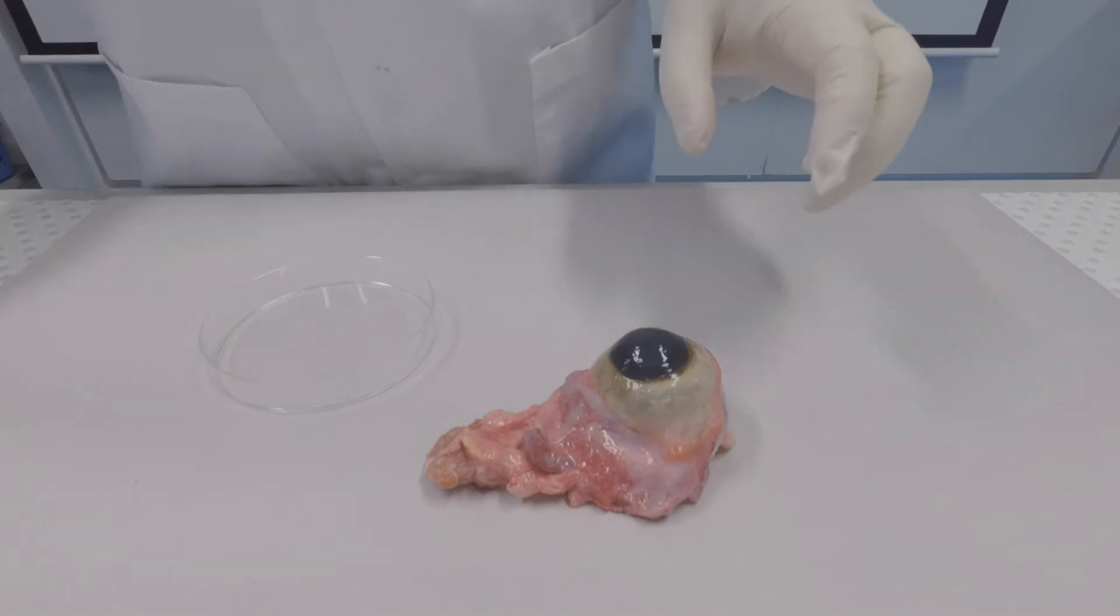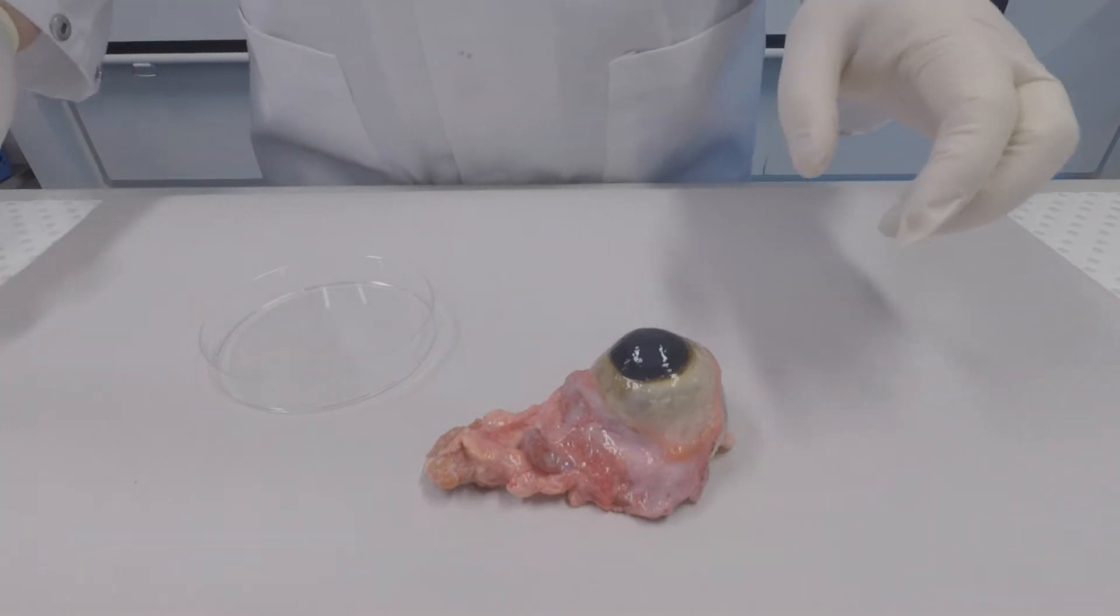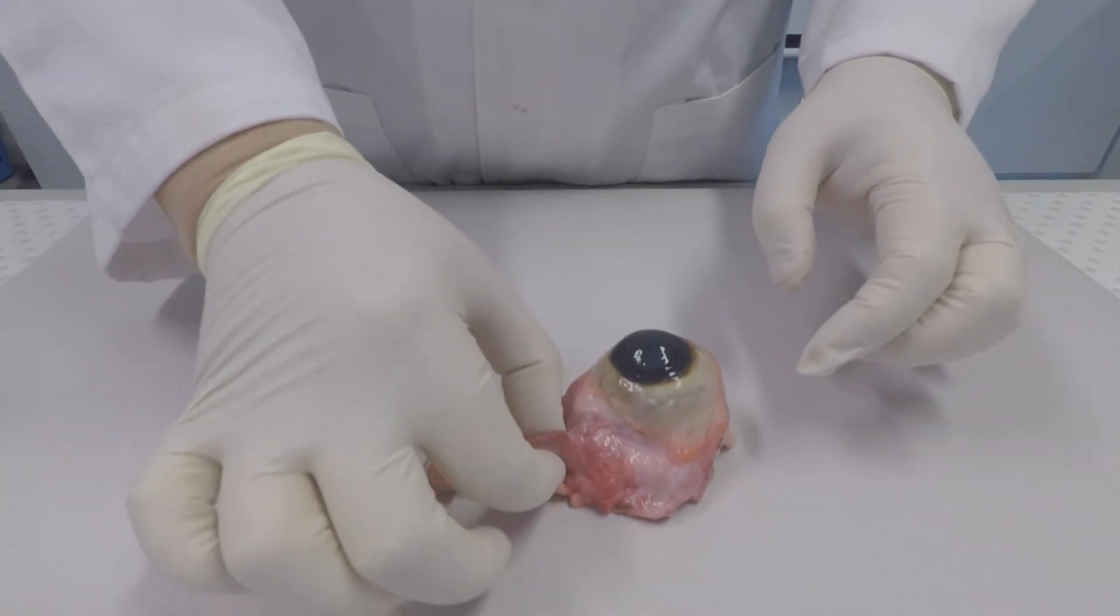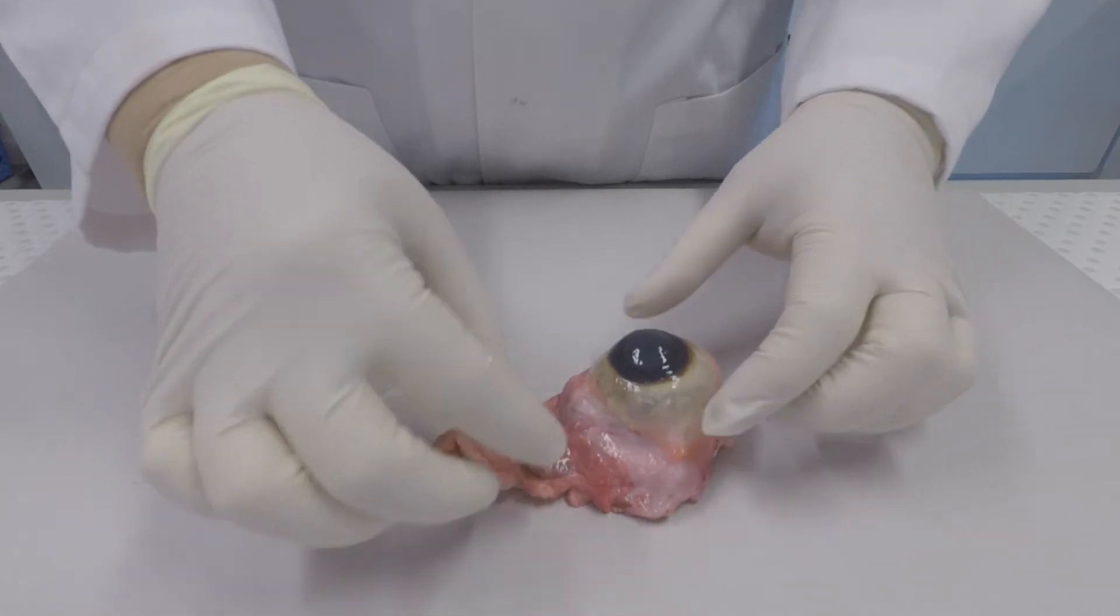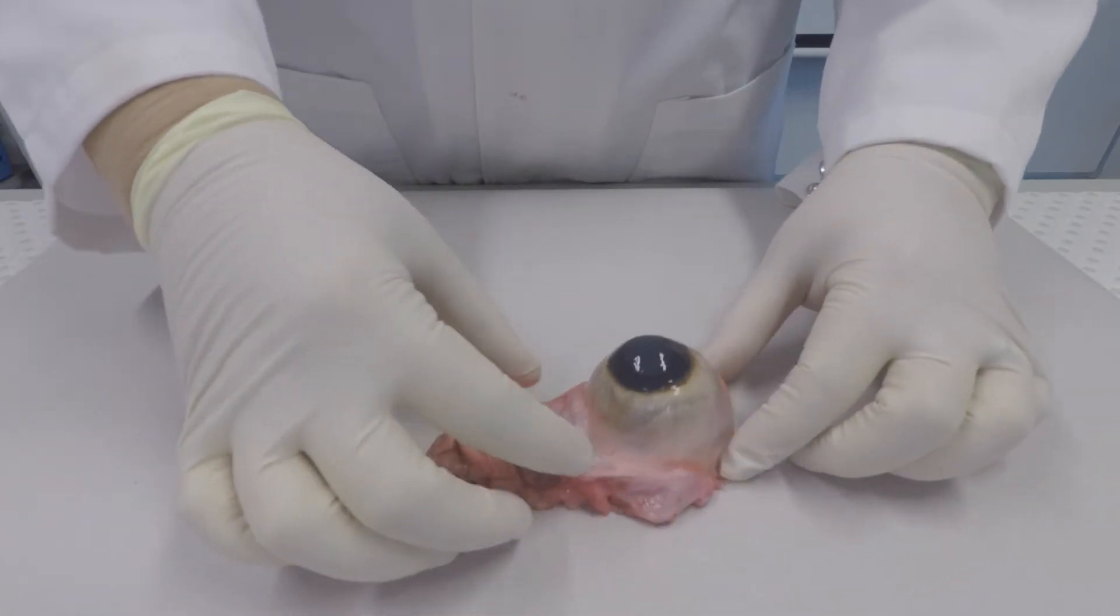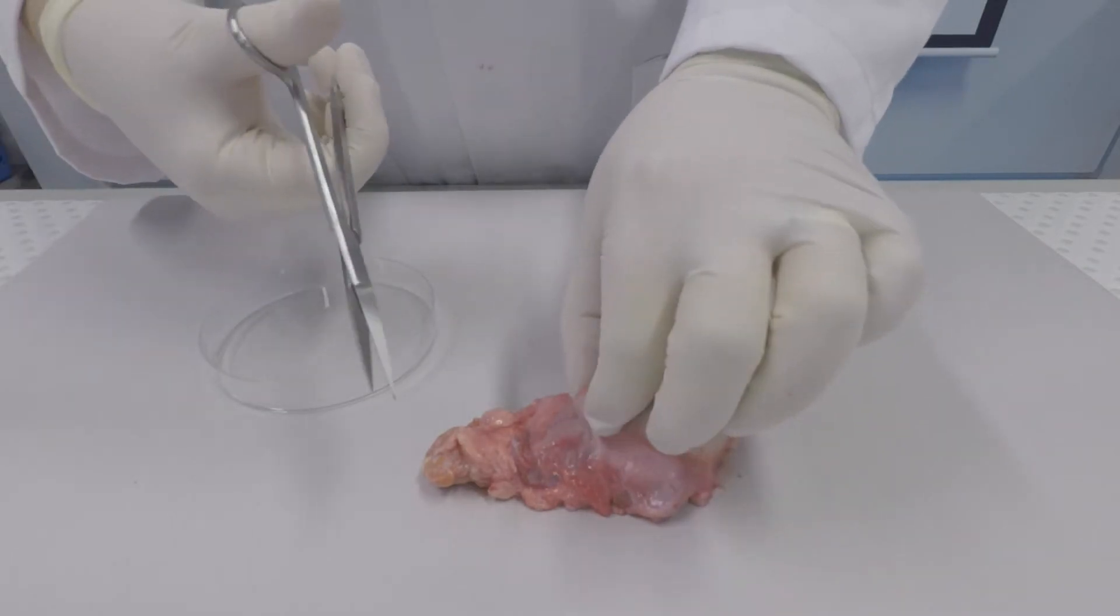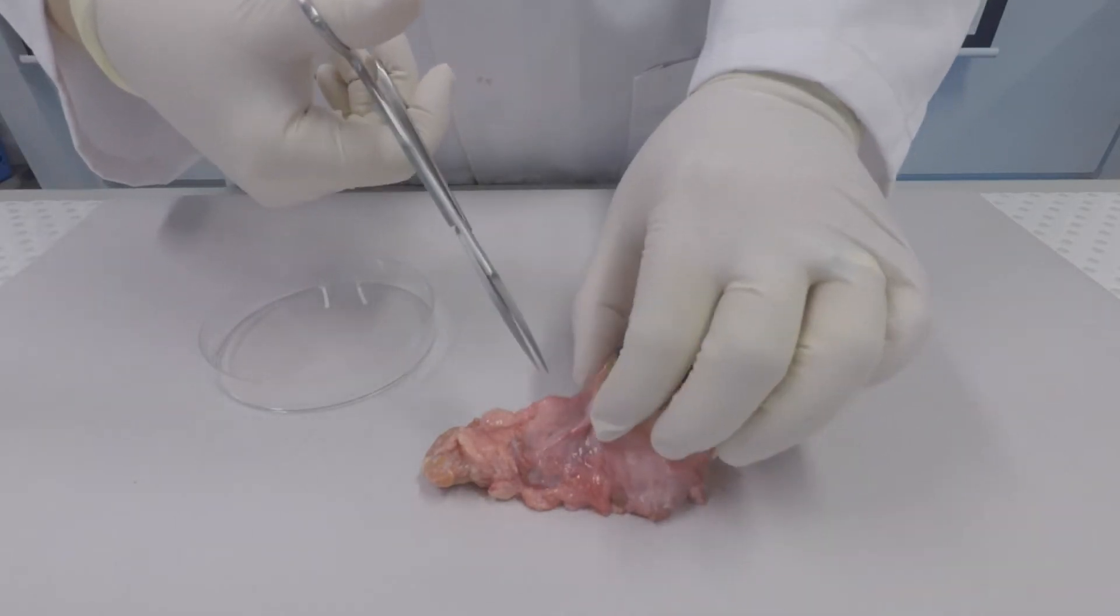Today we're performing an eye dissection. This is a bovine eye. You can see that the eye is surrounded by a lot of fatty tissue and there are muscles attached to the eye. These muscles help to move the eye up and down, left and right.